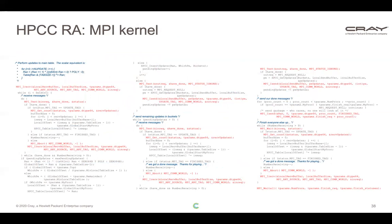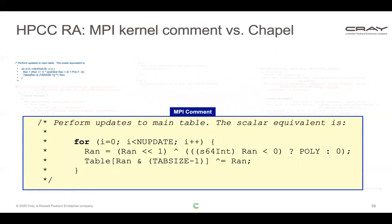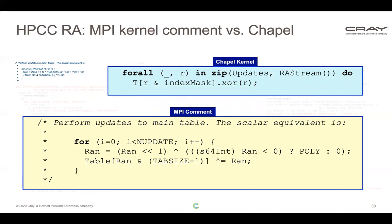Here's the reference MPI code written in C, with MPI calls highlighted in red. There are a lot more of them here than in Stream because there's actual communication taking place with data exchange. A comment in the code explains what the three columns are doing — conceptually just doing a bunch of random updates to the table. If we look at the main loop in the Chapel code, it's essentially two lines: for all the updates we want to do in parallel, update the table using an XOR operation. The Chapel kernel is roughly the same amount of code as the MPI code itself.